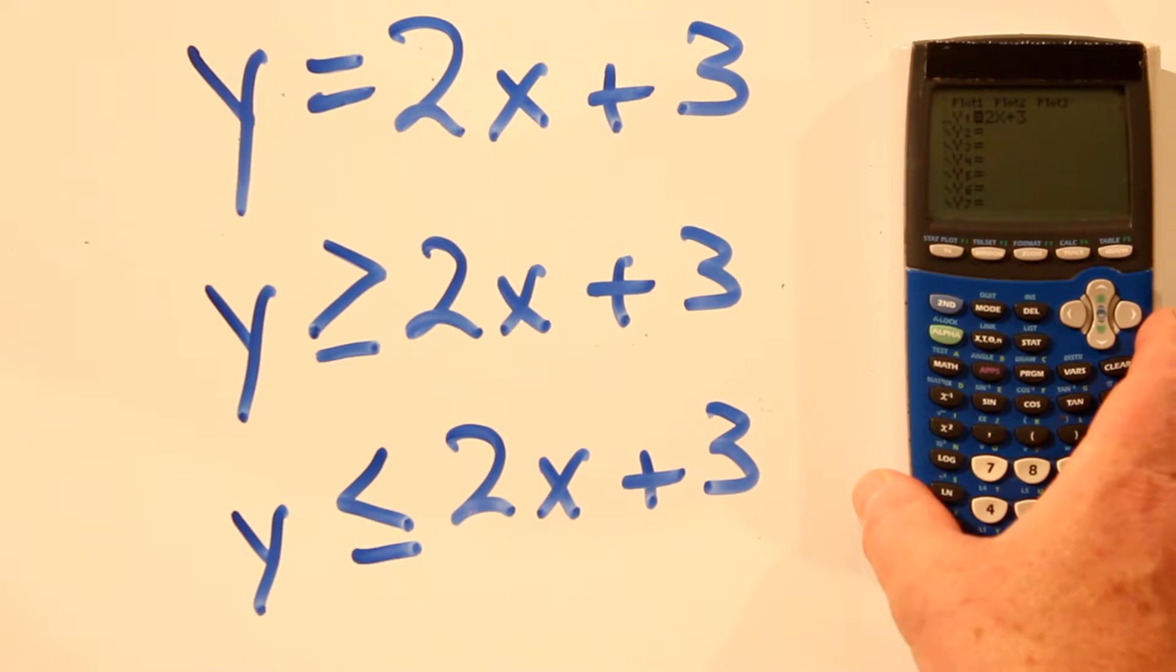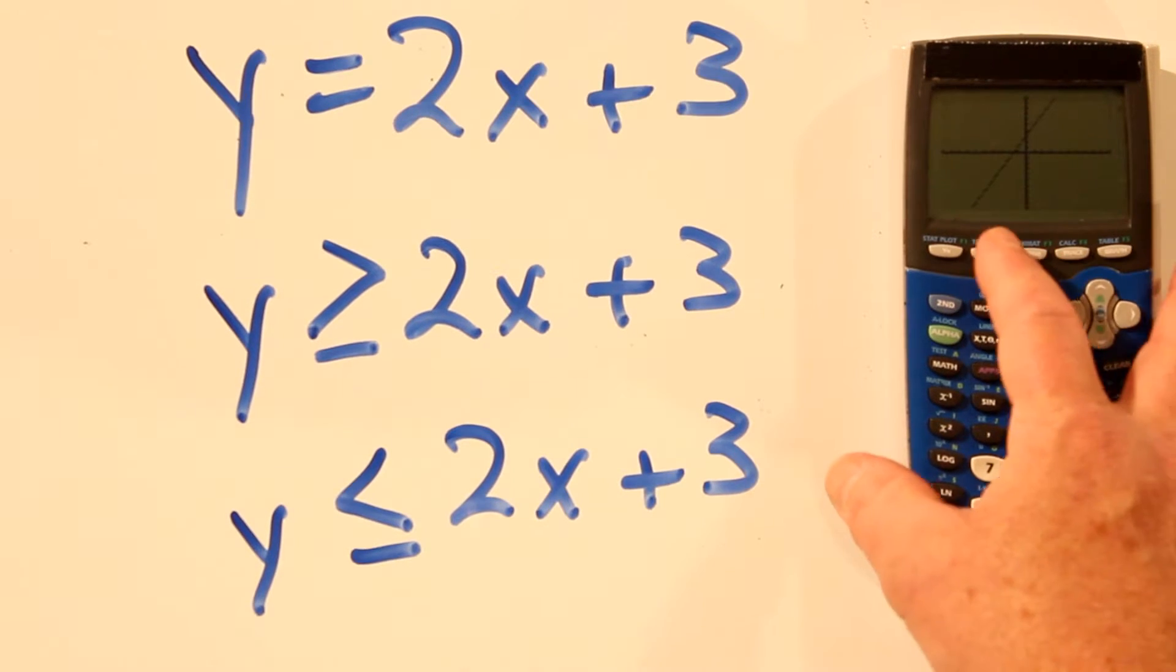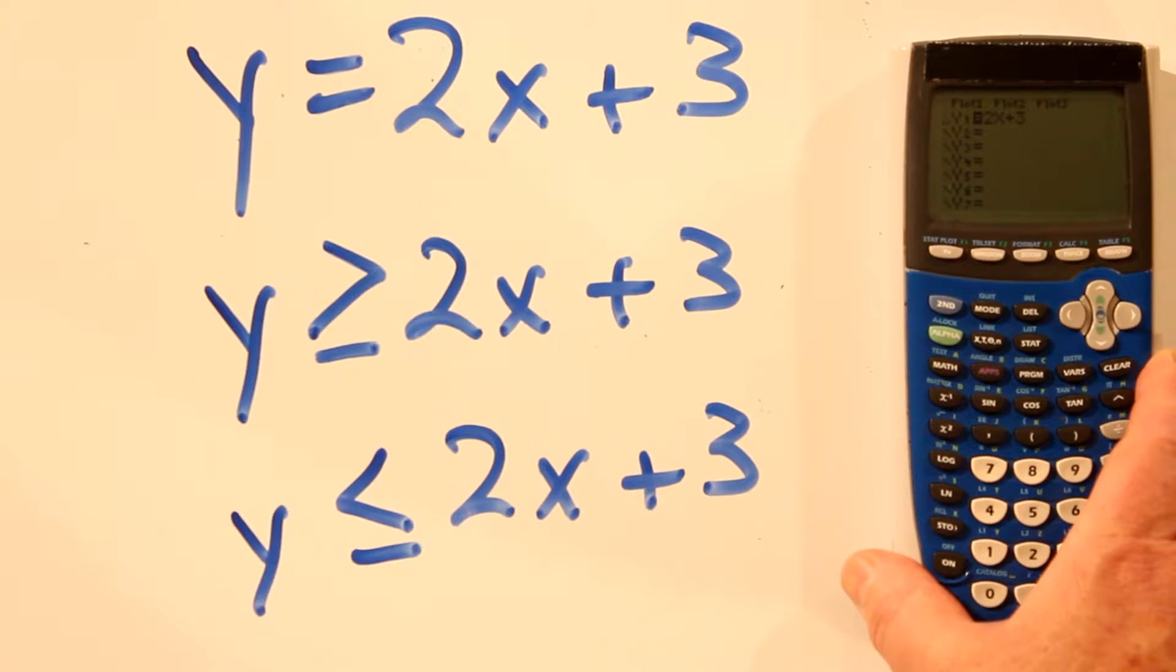And if we hit enter again, we get a dotted line. Again, this helps us distinguish if we have two lines that we're trying to draw. And finally, we hit enter and we're back to the standard line.